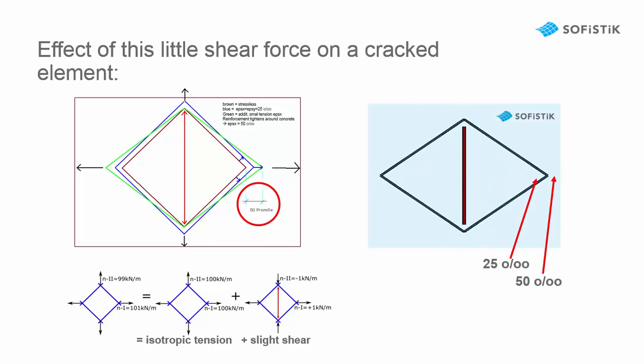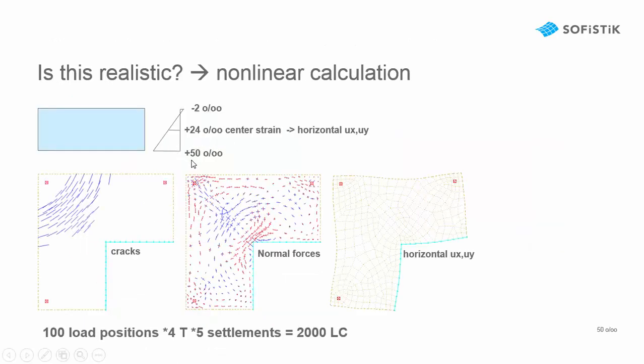Now you may say what a nonsense 50 per mil can never occur in a slab. Because if we assume 50 per mil on the bottom and 2 per mil on the top the element would like to get longer.